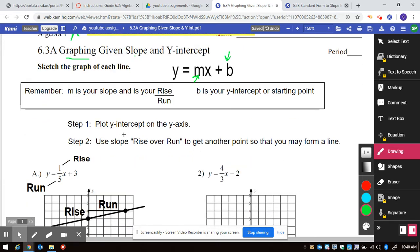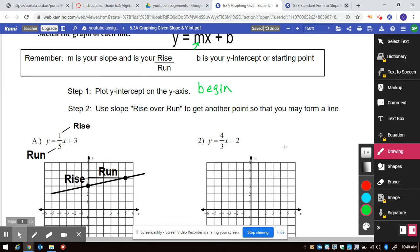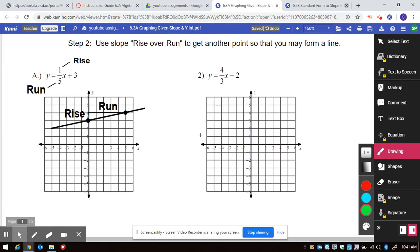So step number one is always, I like to think about this is b means where you begin in y equals mx plus b. So you begin by plotting the y-intercept on the y-axis and you use your slope, your rise over run to get as many points as you need to form the line.